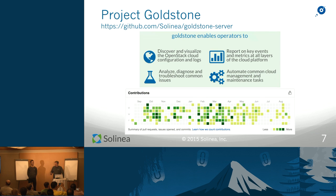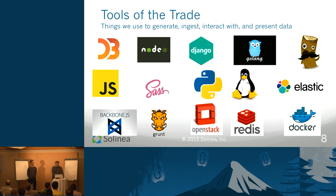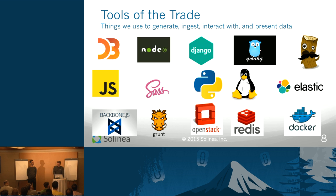Our product area is called Goldstone. Goldstone is a tool to help ingest cloud data — logs, events, API usage, metrics — and analyze that data, giving you reporting tools that help you operate your clouds. The tools we use are the typical data pipeline litany: we're heavily based on Python and Django, pulling data out of OpenStack and Docker. For the front end, which this talk is about, we use Backbone, D3, and JavaScript. On the back end, we're using Logstash to pull in data. That's fairly flexible and fluid, and as we grow we'll change the stack as necessary.